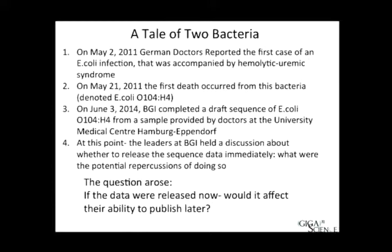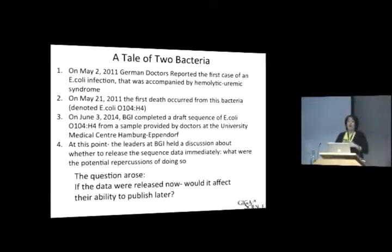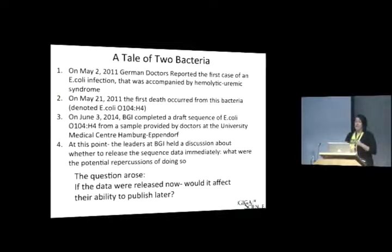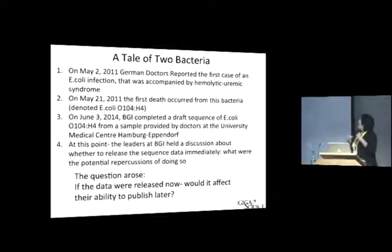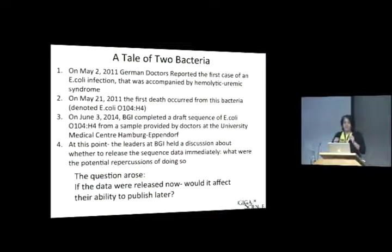On June 3rd, BGI, which is the largest genomics institute in the world, received a sample from doctors at the University Medical Center Hamburg-Eppendorf. They sequenced the draft of the E. coli within hours of receiving the sample, done on an ion torrent. They had the draft sequence and sat down to say, what shall we do? What will happen if we release the data sequence immediately? What are the potential repercussions? And one of the questions that arose was whether releasing the data would affect their ability to publish later. People were dying, but this was a reality.